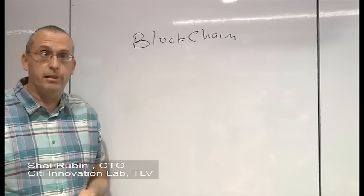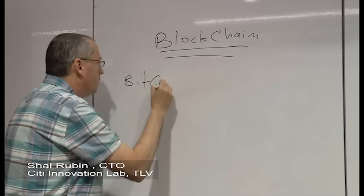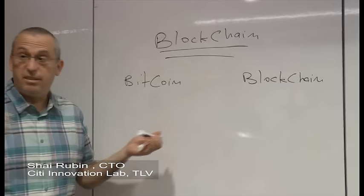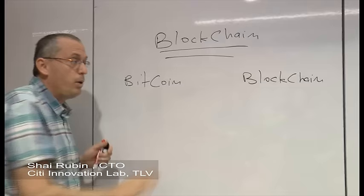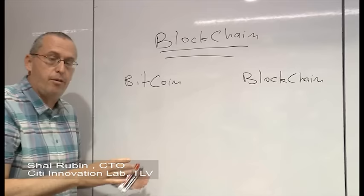Okay, so the first thing that we need to understand are two basic terms: Bitcoin and blockchain. Bitcoin is a digital coin, it's money which is digital. We are not going to talk about Bitcoin at this talk. We are going to talk about blockchain. Blockchain is technology that enables moving digital coins or assets from one individual to another individual. It's very important to understand that Bitcoin is not blockchain.